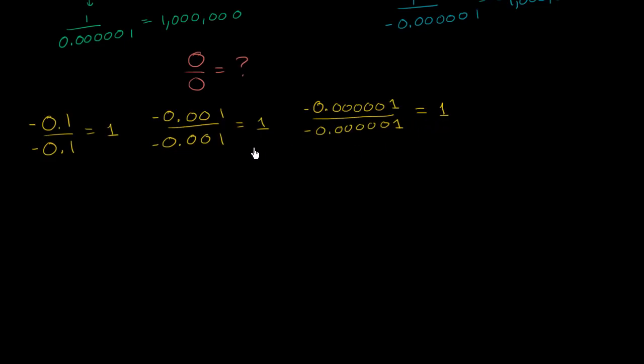So based on this logic, you might say, this seems like a pretty reasonable argument for 0 divided by 0 to be defined as being equal to 1.